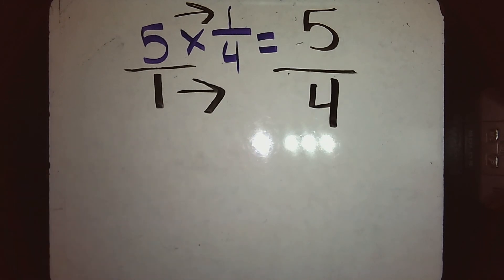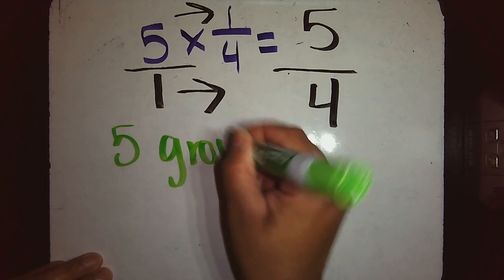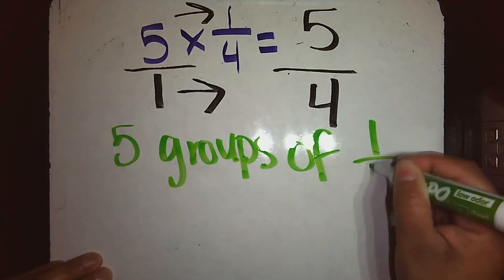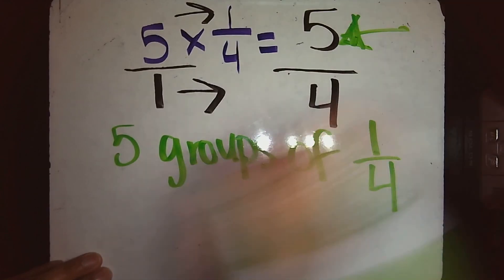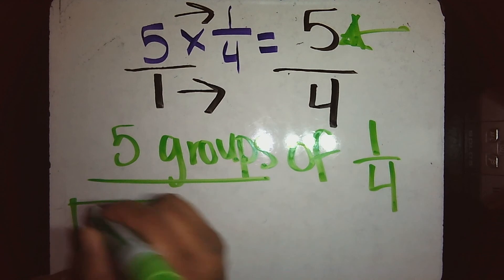Now, in using symbols, I will draw 5 groups of 1/4. Because my numerator tells me I have 5 groups. So here are my five groups that will be of four pieces.